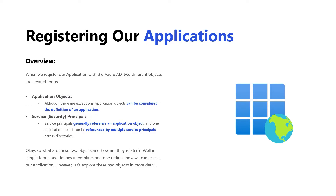When we register our application with the Azure Active Directory, two different objects are created for us. The first one is the application object. The application object can be considered the definition of an application. This is coming directly from Microsoft, and when I first read that I thought — okay, so what does that mean?